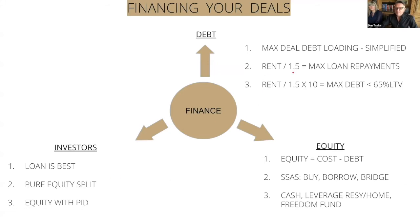Take the rent, divide by 1.5, you get your maximum loan repayments. Then take that figure and multiply it by 10 and you've got your maximum debt loading that you can put on a deal in a very simplified way. As long as that is less than 65% LTV, that should be the kind of debt profile you can get from a bank, whether that's a tier one bank or a challenger bank.